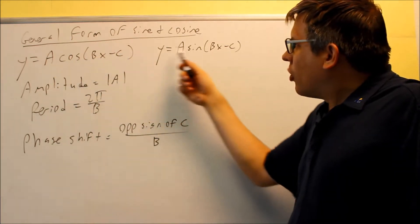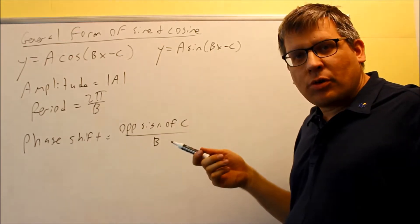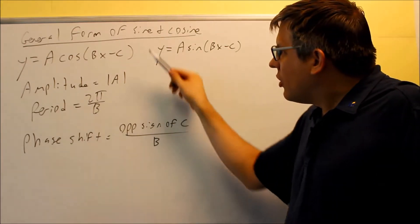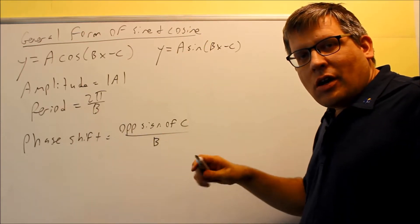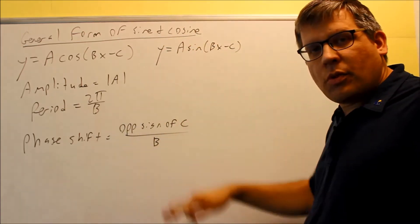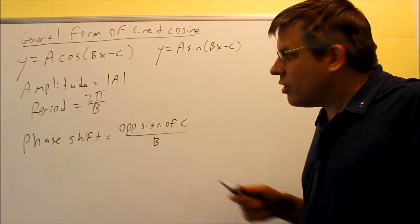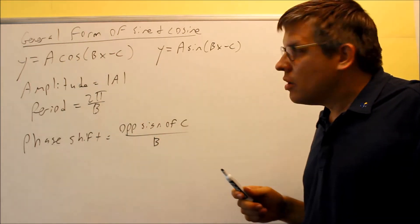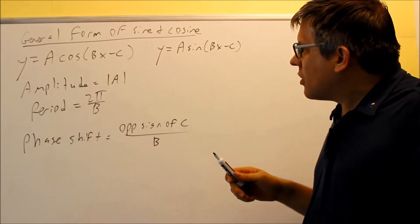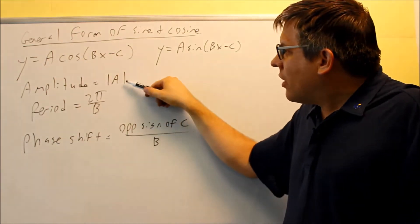This is what the general form of sine and cosine looks like: y = A cos(Bx + C). Now you might have in the book, depending on what book you're using, you might have a plus D on the end, and that would be vertical transformations where you're going up and down. We're not going to focus on those for these videos, so I'm just going to look at A, B, and C only. My amplitude is always the absolute value of A.